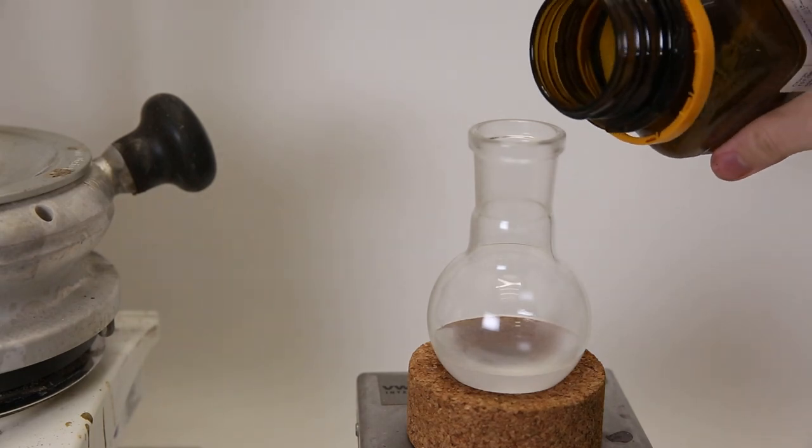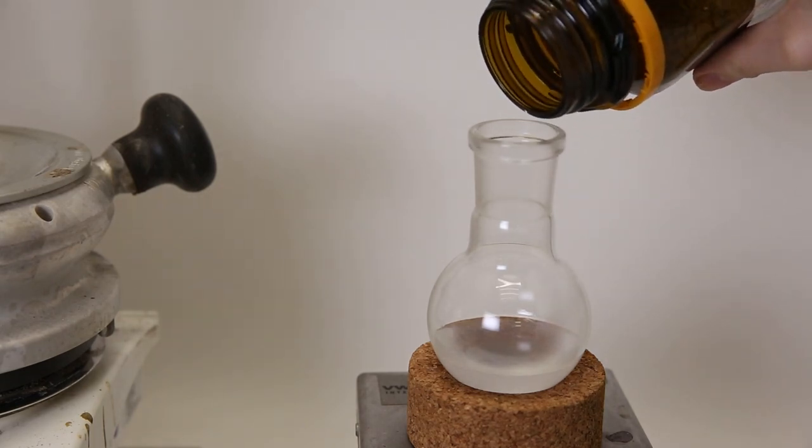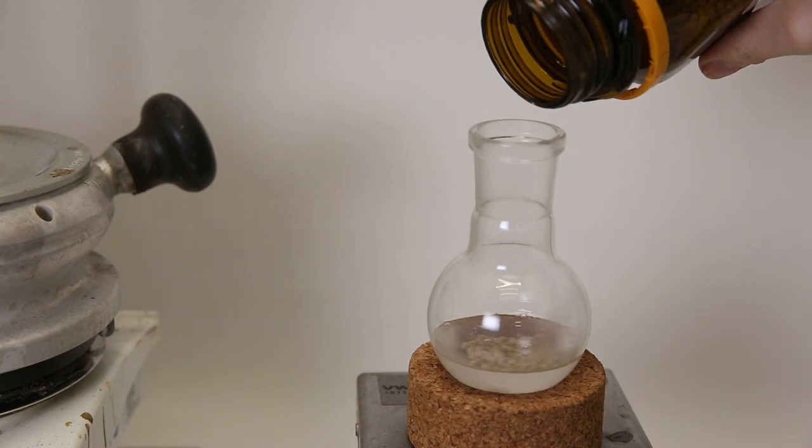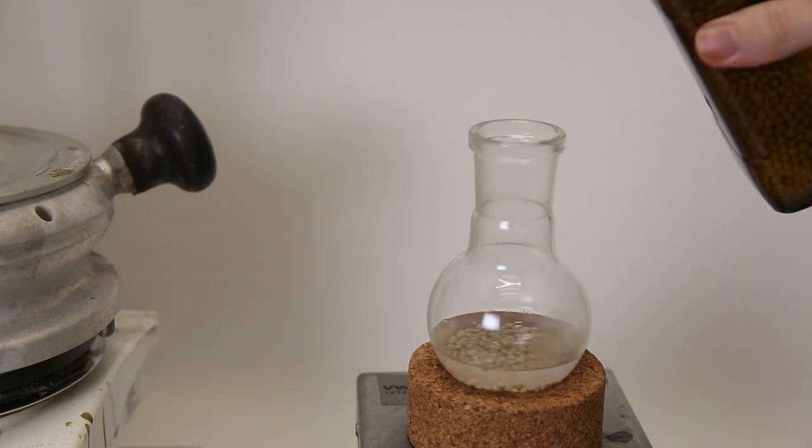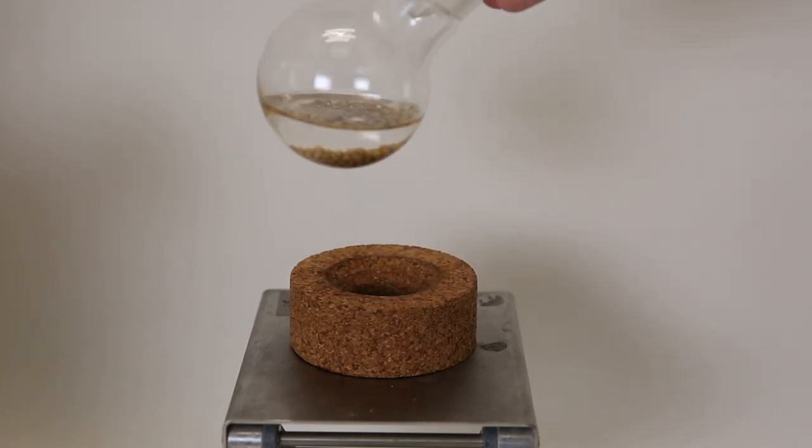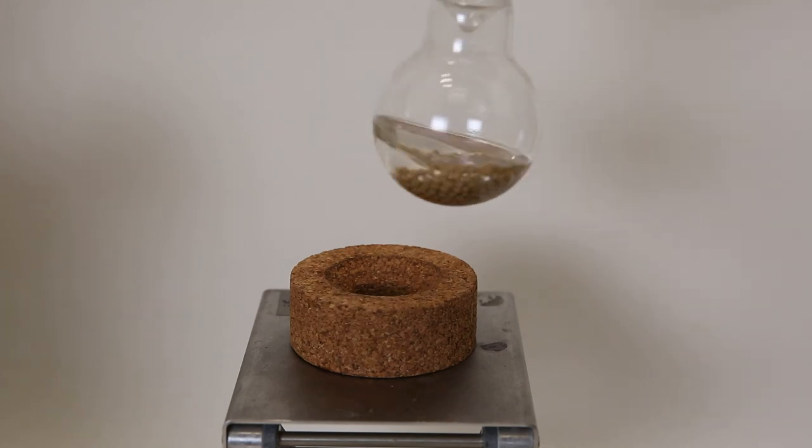So the benzene is still a little bit cloudy, which means there is water present. So I add some molecular sieves to the benzene, which will trap water inside of its structure. After shaking it, we can see that the liquid has instantly turned clear.